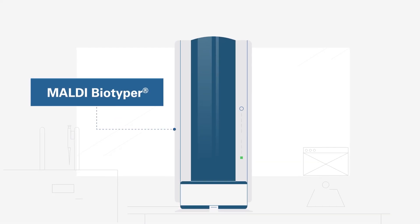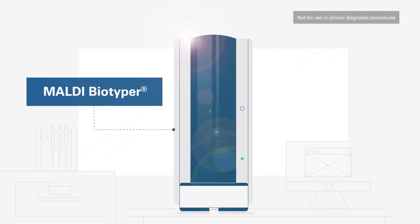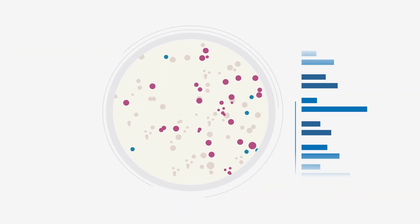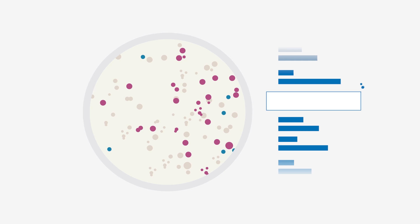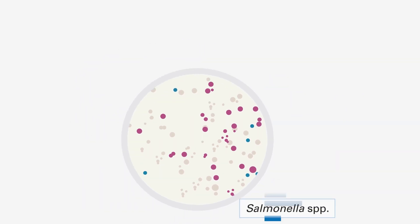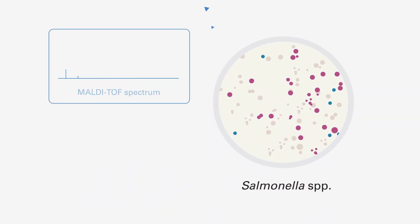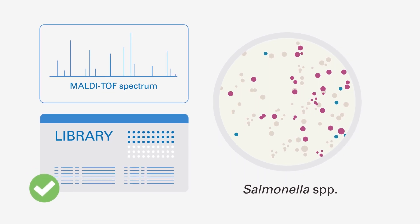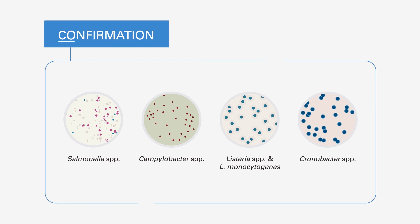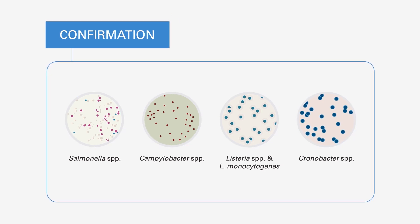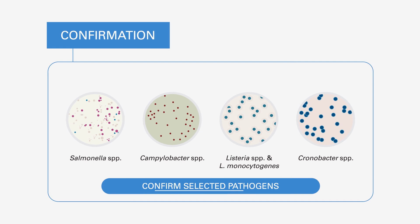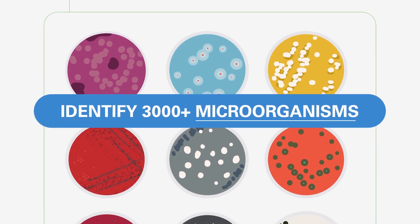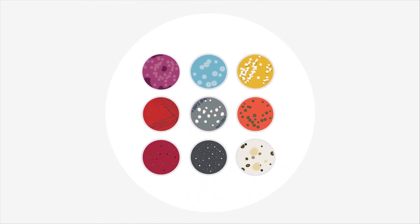Introducing the MALDI Biotyper from Bruker Daltonics for Microbiology of the Food Chain. The MALDI Biotyper confirms and identifies microorganisms using MALDI-TOF mass spectrometry to determine the unique proteomic fingerprint of an organism. This characteristic spectrum is used to reliably and accurately identify a particular microorganism by matching thousands of reference spectra from microorganism strains.